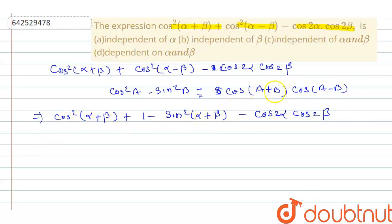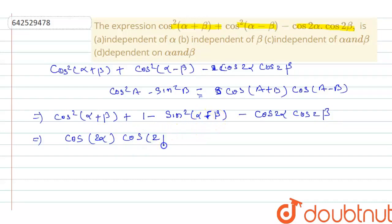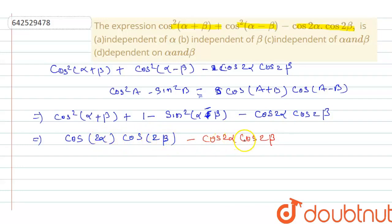So I will write cos(a+b)·cos(a-b). It will be cos((α+β) + (α+β)) · cos((α+β) - (α+β)), giving cos(2β). Minus cos(2α)·cos(2β). So we have cos(2α)·cos(2β) minus cos(2α)·cos(2β).